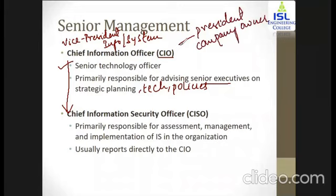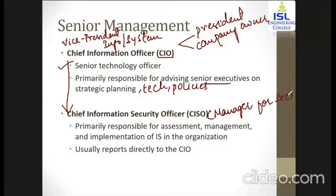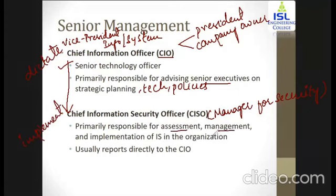Under the CIO, the CISO works. CISO stands for chief information security officer, also referred to as the manager for security. While the CIO dictates the goals, practices, and technologies, the CISO is the one who implements all of this. The CISO assesses each and every policy to be implemented and manages the implementation of information security within the organization, reporting to the CIO.